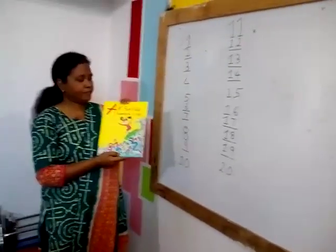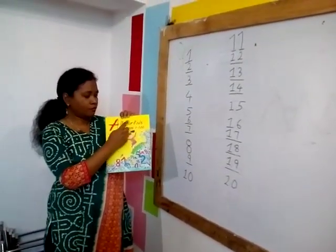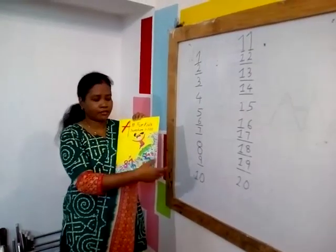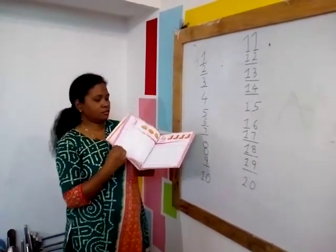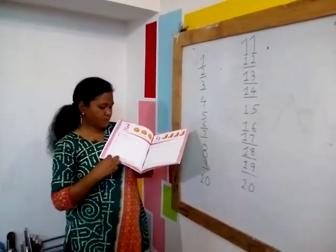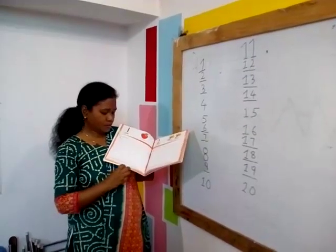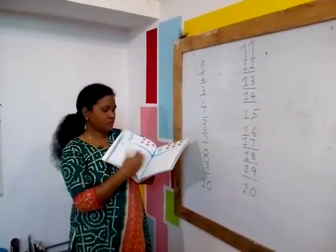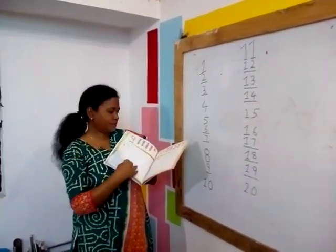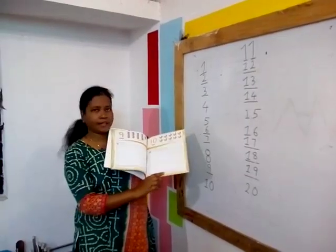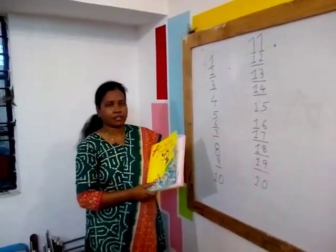Now, everyone has got this book — all four kids — 'Numbers One to Hundred.' You will do page number 2 to 11 with the help of your parents.